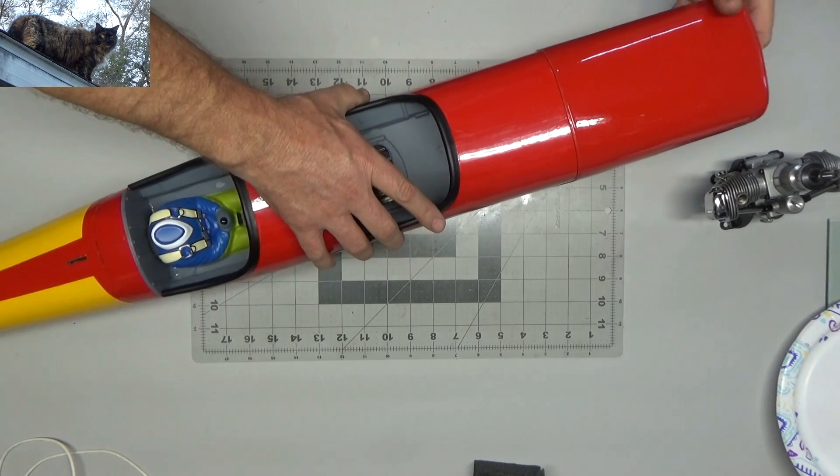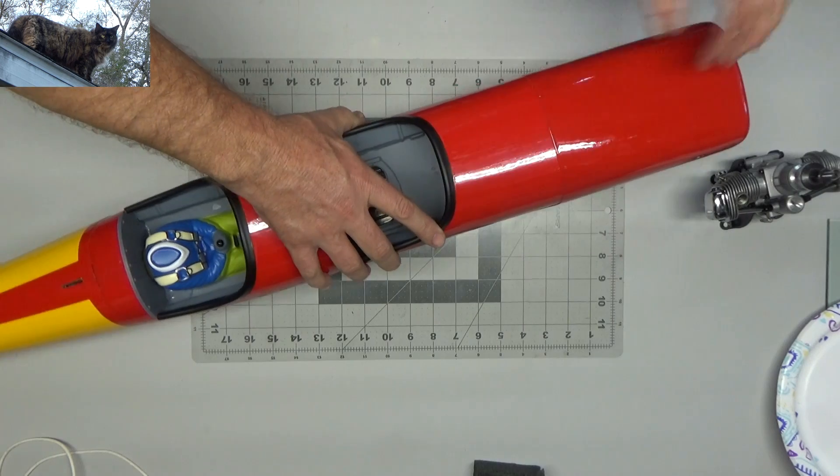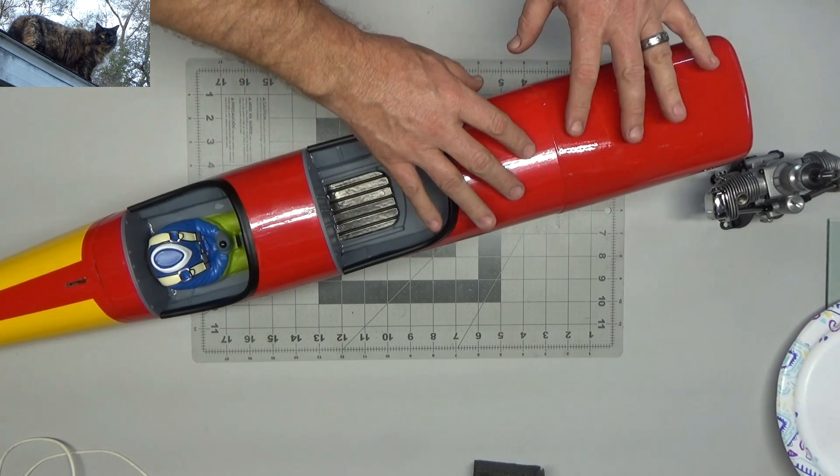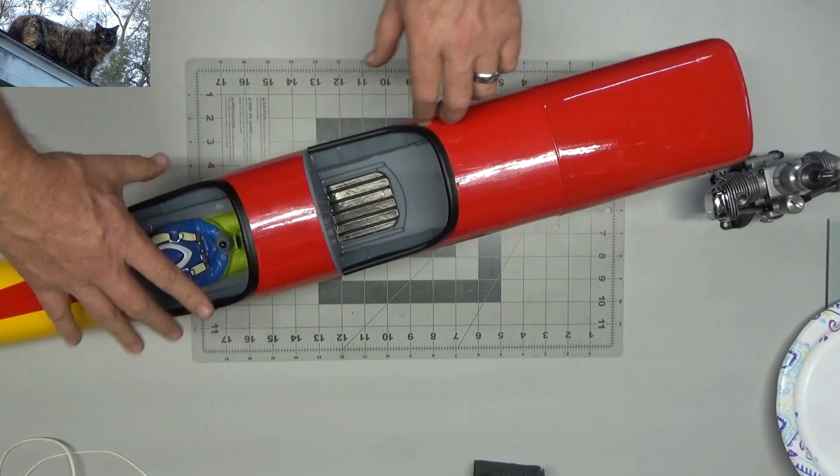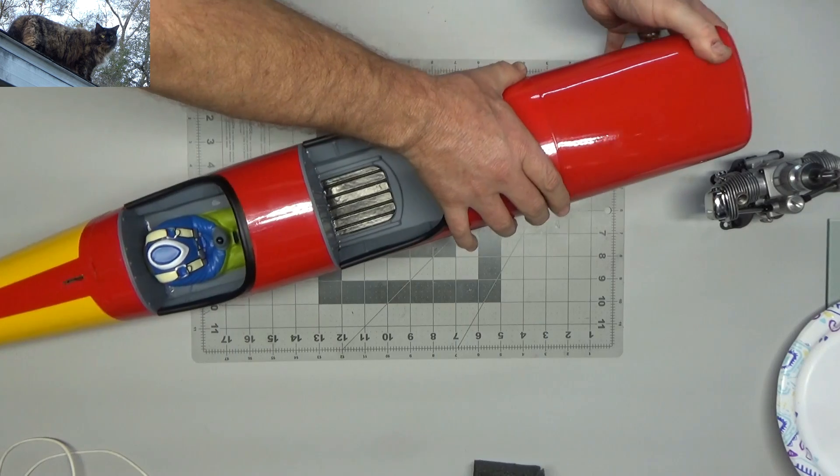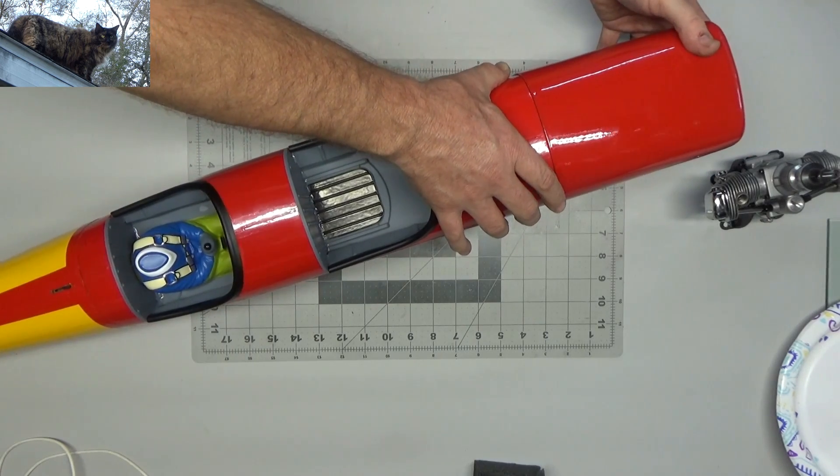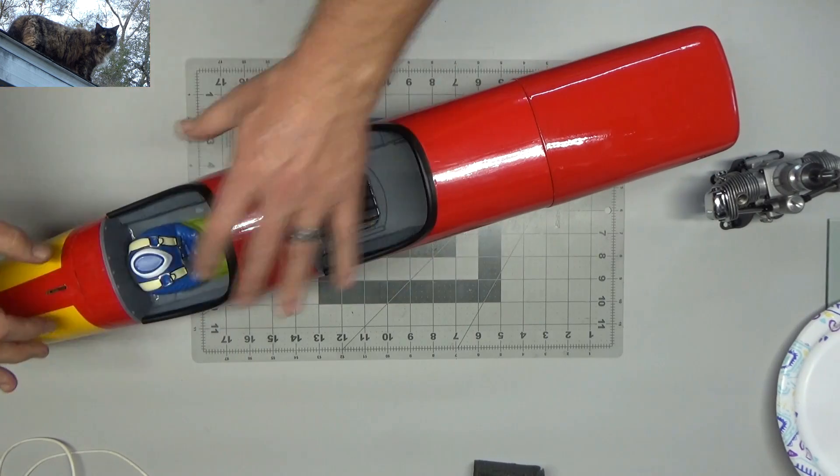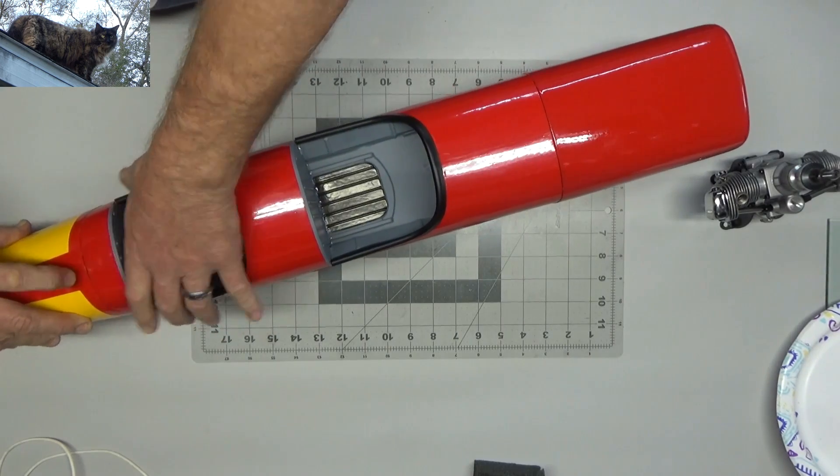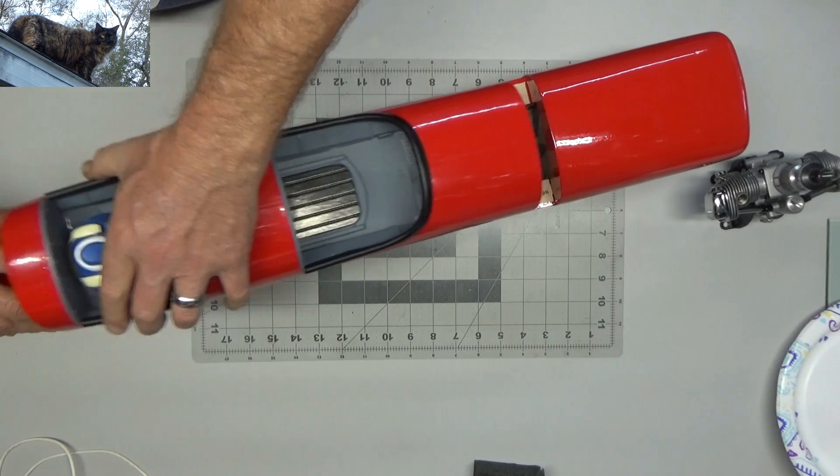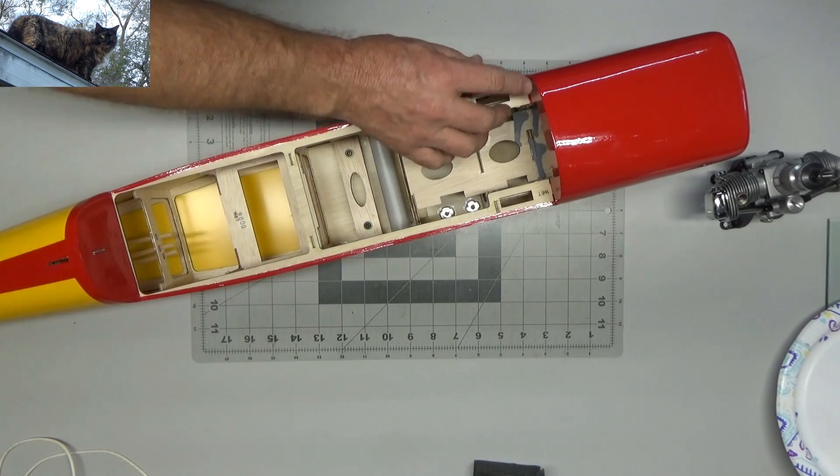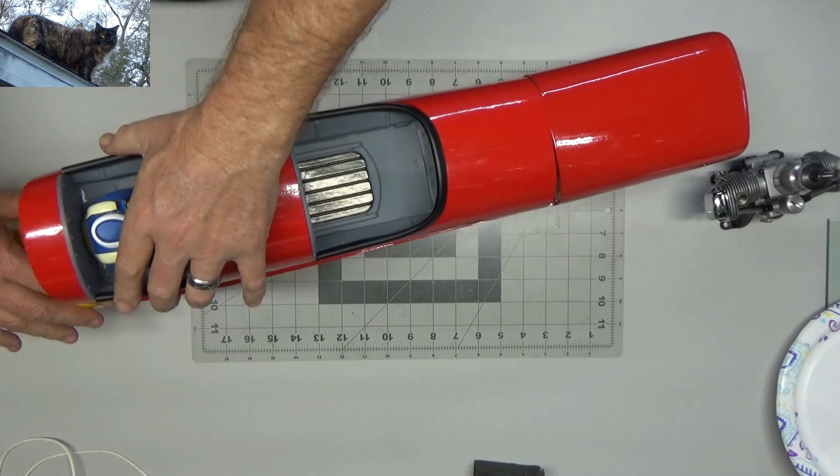So if I slide this all the way on so that it does cover that, see I can't imagine them designing it so that you have to remove the cowl to get in here. So that's what's telling me that this is only designed to go this far so that you can still access your battery and fuel tank and stuff while the cowling is on. So I'm convinced that that's as far on as it's supposed to go.